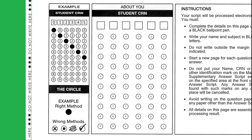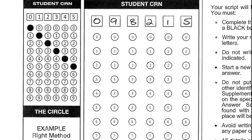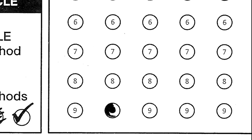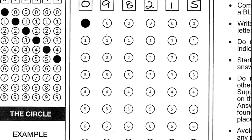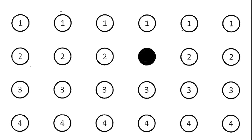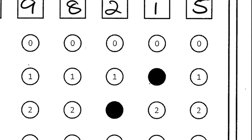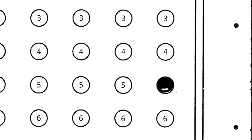First, I am writing the six-digit CRN — 098215 — in six square-shaped boxes. Now I am shading the relevant circles: the first circle in the first row for 0, the second circle in the last row for 9, the third circle in the ninth row for 8, the fourth circle in the third row for 2, the fifth circle in the second row for 1, and the sixth circle in the sixth row for 5.